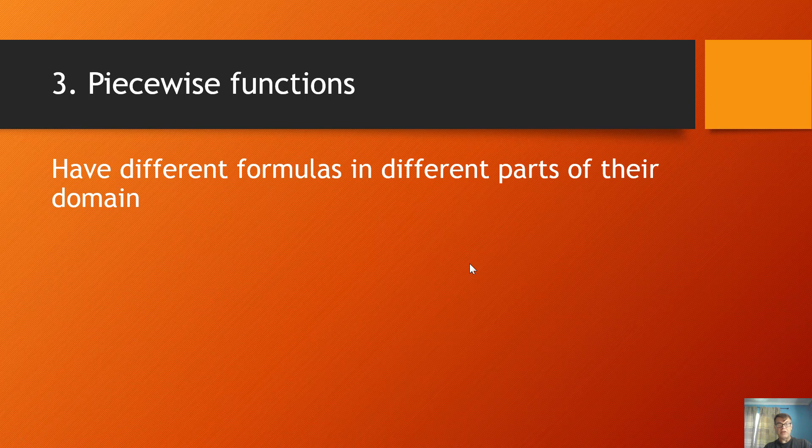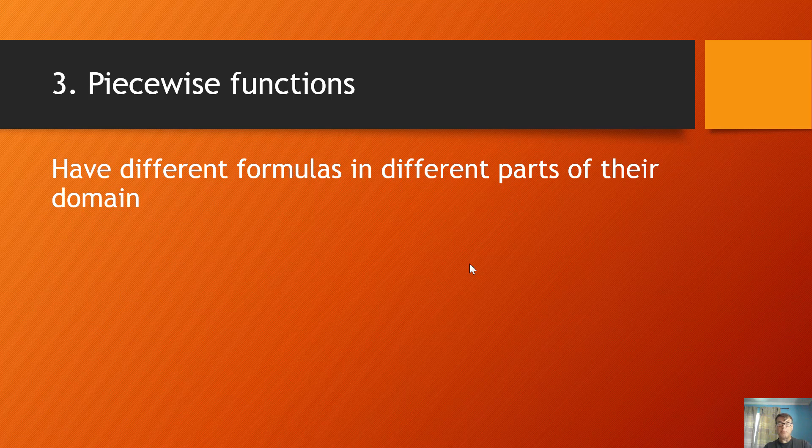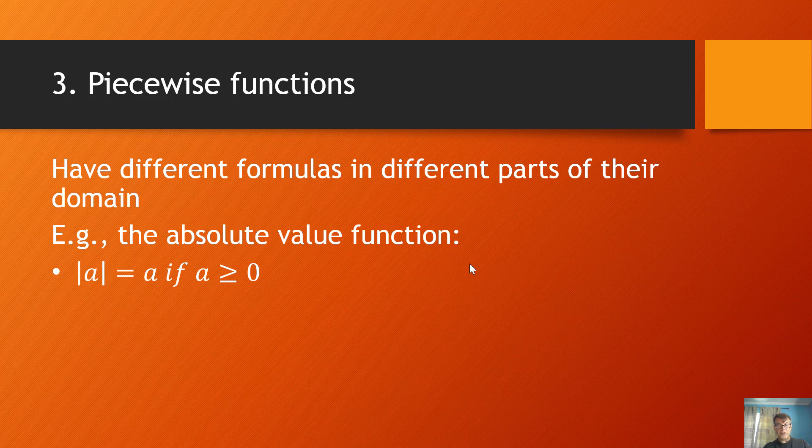Lastly, the piecewise functions. I've already mentioned, piecewise functions have different formulas in different parts of their domain. So take the absolute value function. The absolute value of a equals a if a is greater than or equal to zero. But the absolute value of a equals negative a if a is less than zero. So you can see for different parts of the graph, you have a different formula, as it were. So that's a review of different kinds of functions.